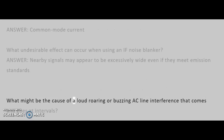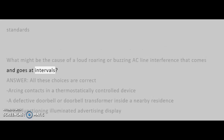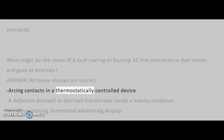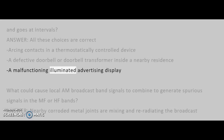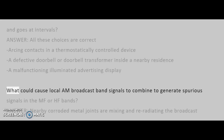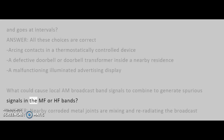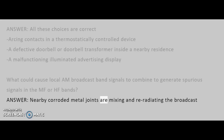What might be the cause of a loud roaring or buzzing AC line interference that comes and goes at intervals? Answer: All these choices are correct — arcing contacts in a thermostatically controlled device, a defective doorbell or doorbell transformer inside a nearby residence, or a malfunctioning illuminated advertising display. What could cause local AM broadcast band signals to combine to generate spurious signals in the MF or HF bands? Answer: Nearby corroded metal joints are mixing and re-radiating the broadcast signals.